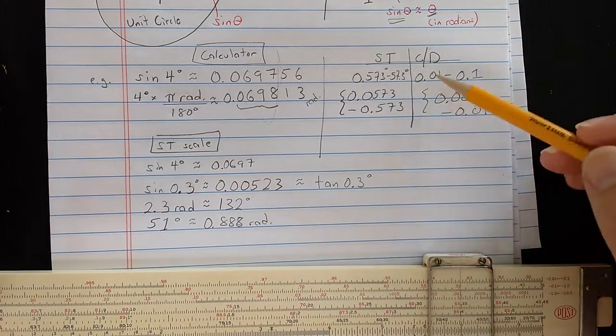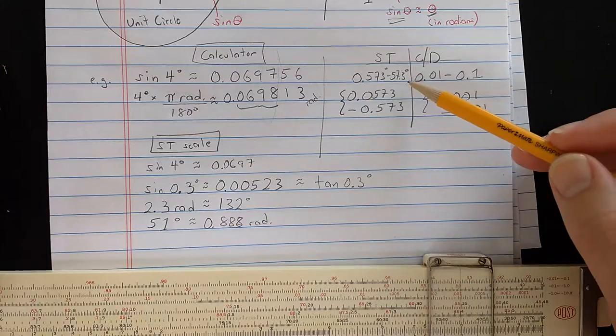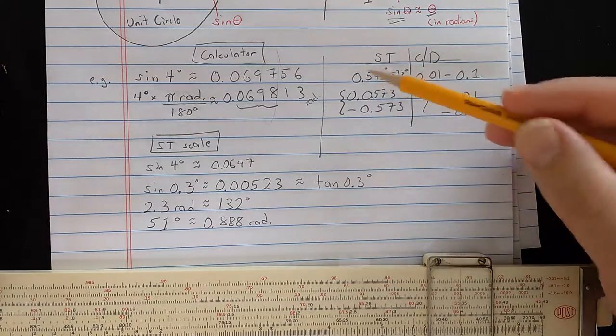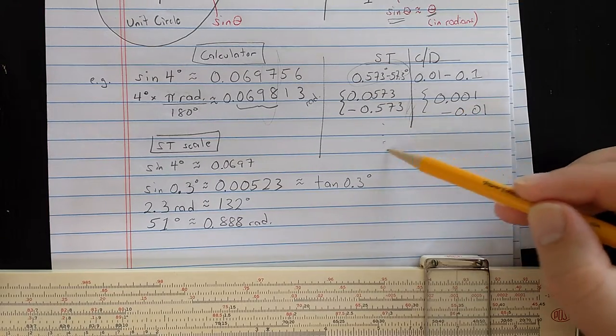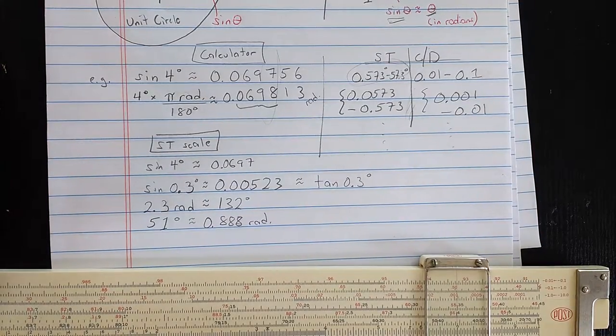Now, one trick with the ST scale is that you can use it for even smaller angles than the range you might think of. You can use it for angles in the next order of magnitude down, and actually any order of magnitude down that you want.